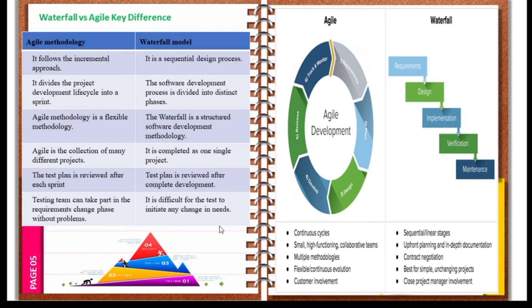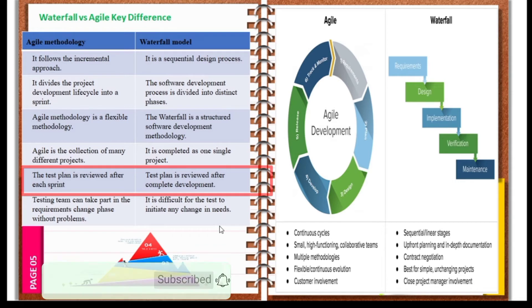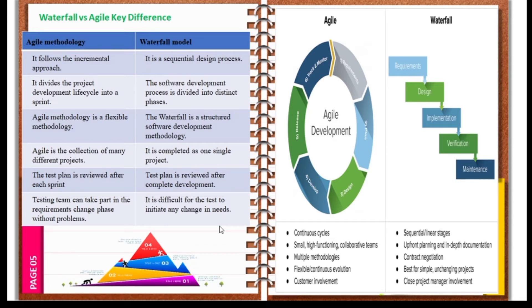In Agile, the test plan is reviewed after each sprint — development is tested and reviewed per sprint. In Waterfall, the test plan is reviewed only after complete development. In Agile, the testing team can take part in the requirements change phase without any problem.